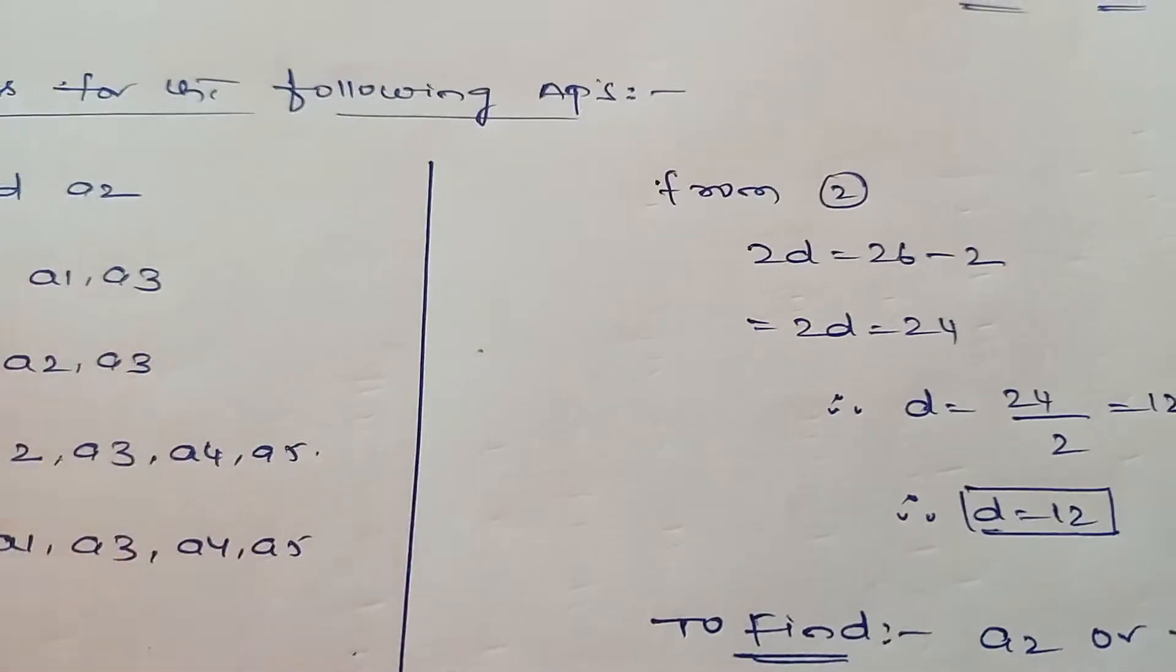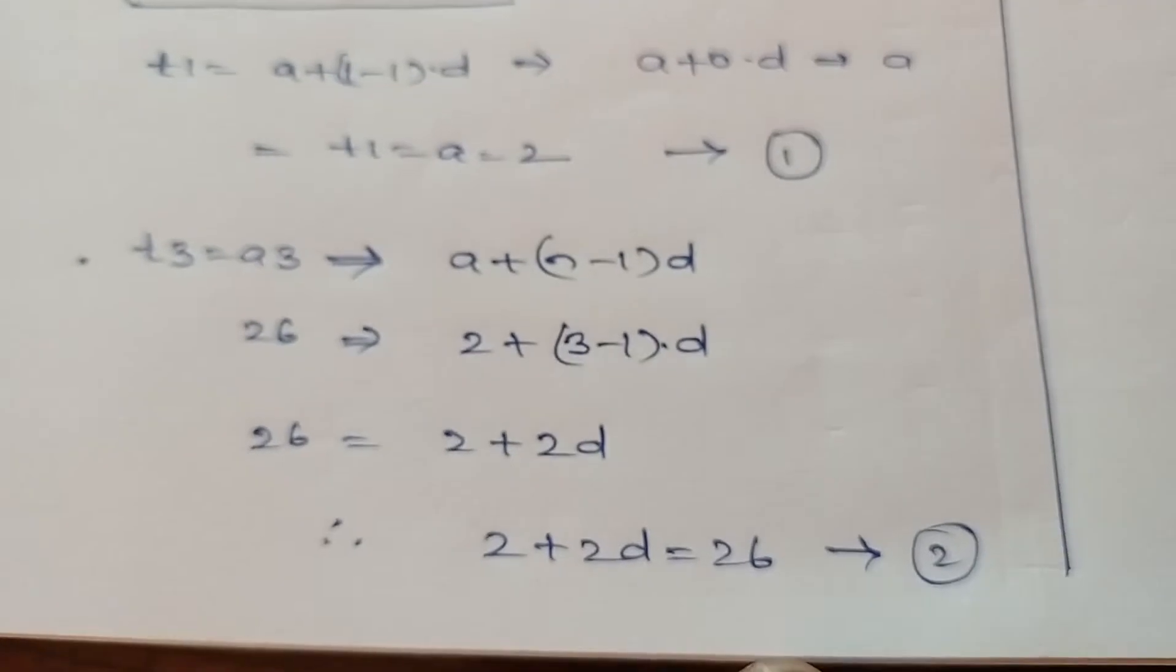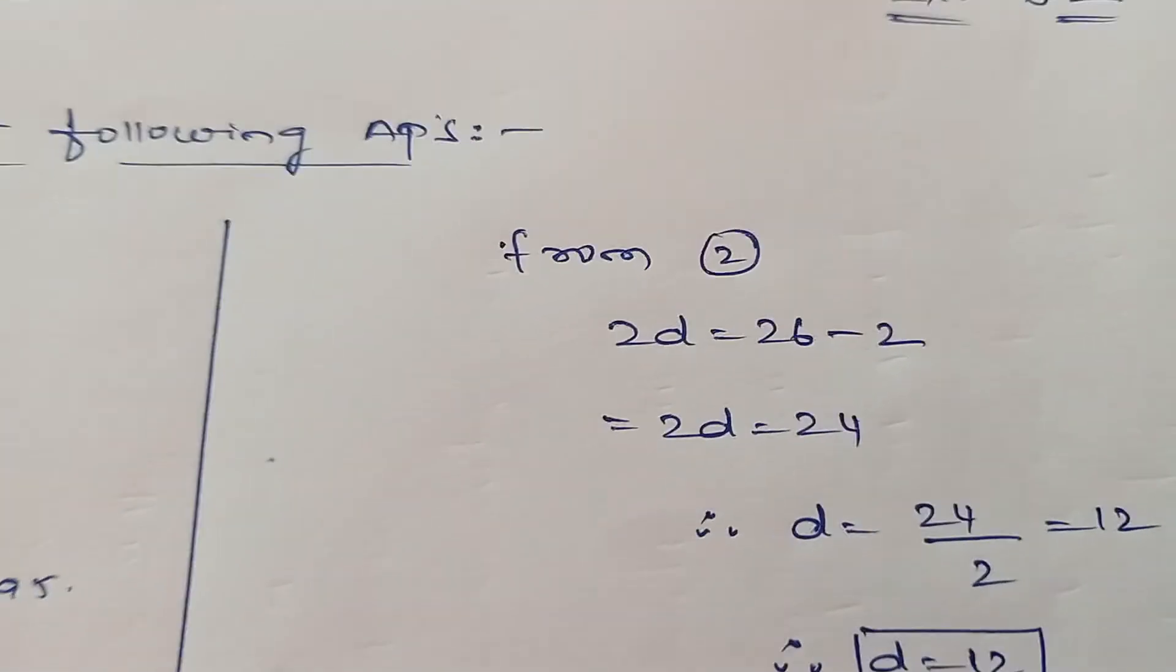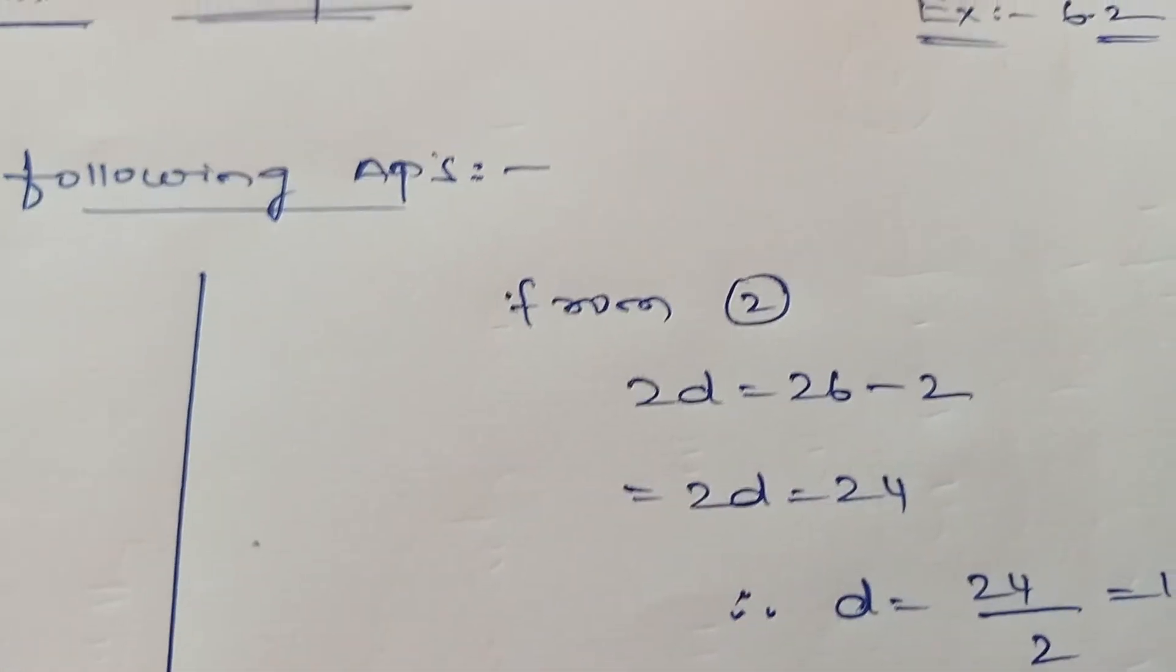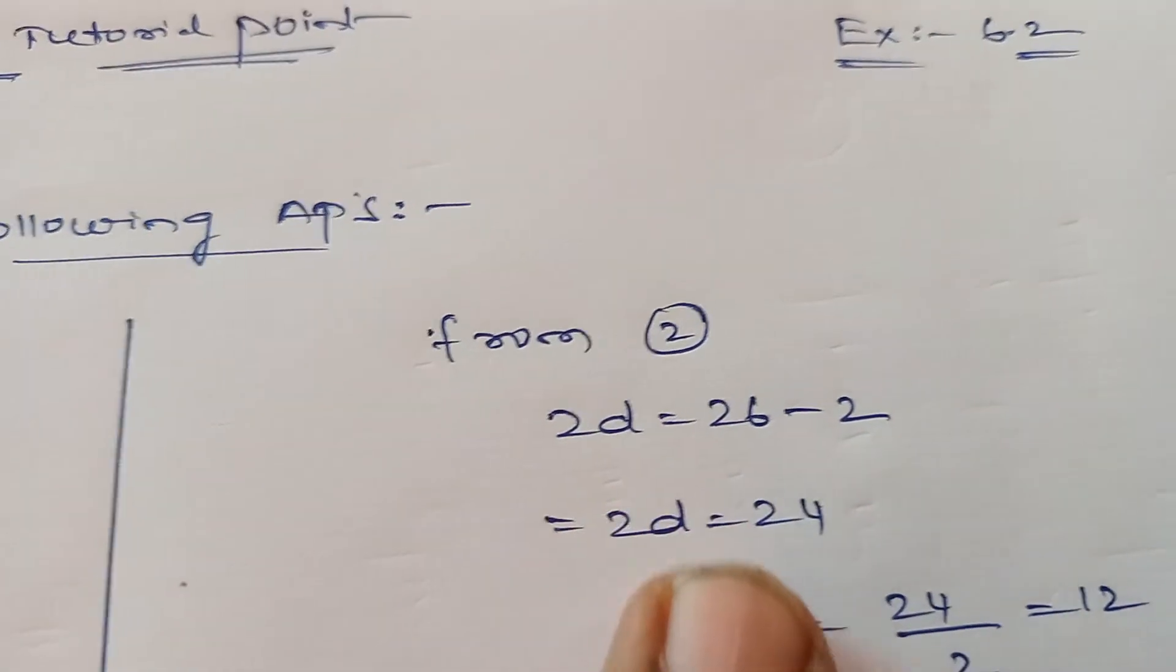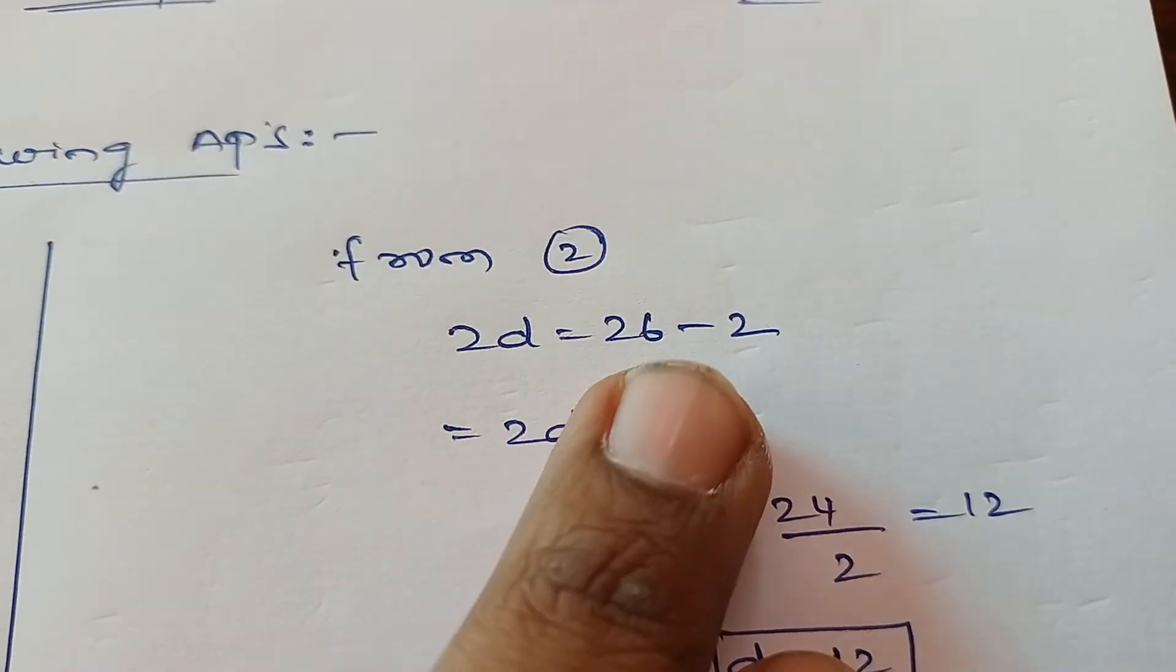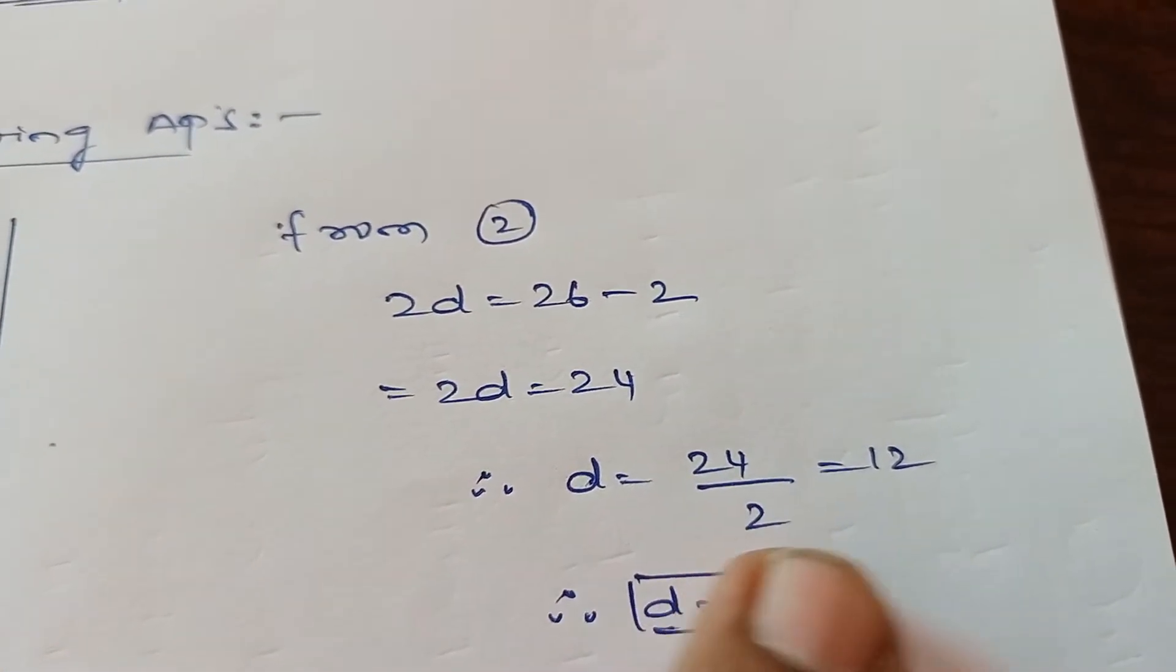From equation 2, shift the terms to RHS, make d as subject and find the value of d. 2d equals 26 minus 2, that's 24. Therefore d equals 24 by 2, that's 12. Therefore d equals 12.